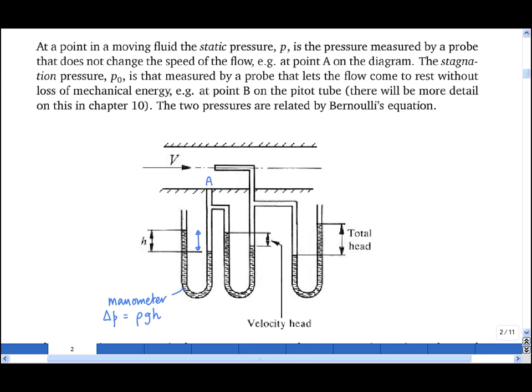now that is measured without changing the speed of the fluid, then that pressure is called the static pressure. The static pressure is just the pressure that one measures at a point without changing the speed of the flow.